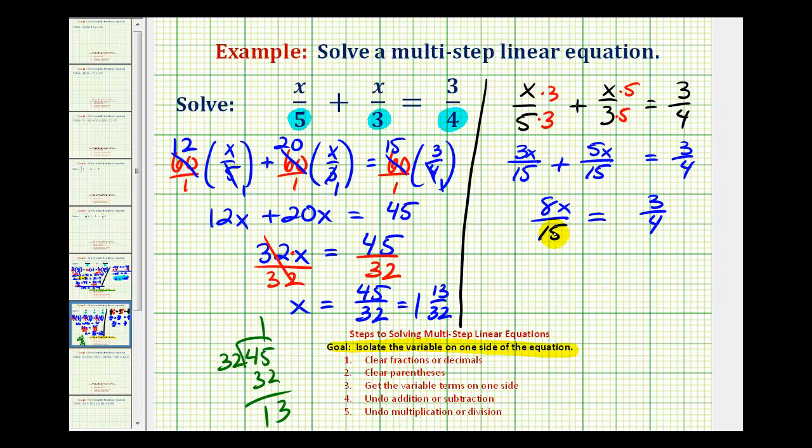And then to isolate the variable here, we could multiply by the reciprocal of eight-fifteenths, which would be fifteen-eighths. And this would give us one x, or just x, on the left side of the equation.